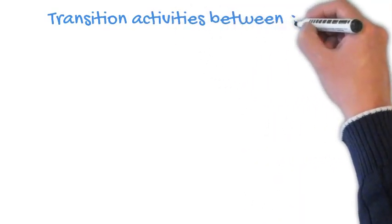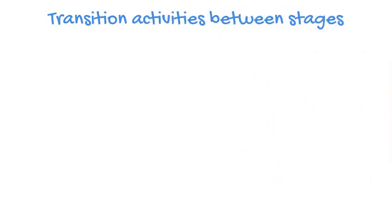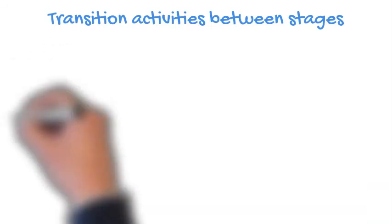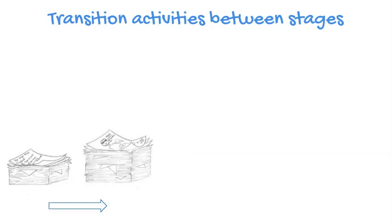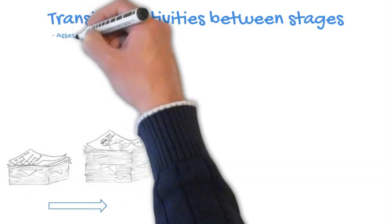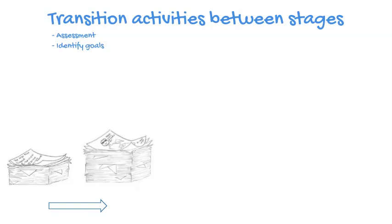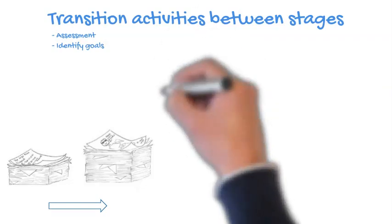To evolve from one stage to another, we need to consider a number of transition activities. For the transition from stage 1 (document-based) to stage 2 (document-centric), we need an assessment of our current capability — using tools like the MBSE slide. Very importantly, we also need to know why we want to do MBSE in the first place. If we don't know why, we can't demonstrate that we've met our objectives. It's essential to know what outcomes we want when deploying MBSE.